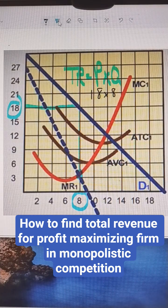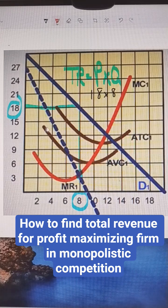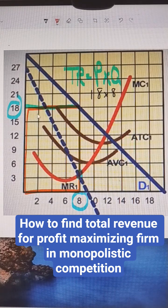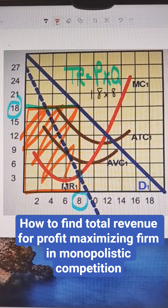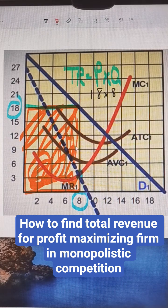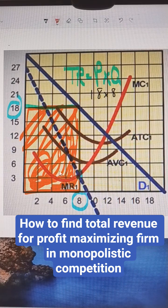So 144, that is the total revenue. It's also the area of this rectangle here. So if you were shading it, it would be this big rectangle here.